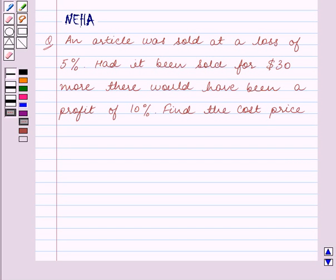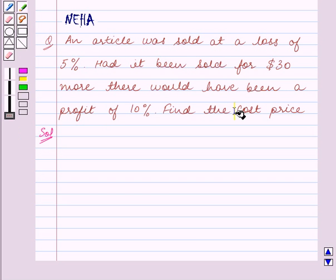Hello and welcome to the session. In this session we will discuss the following question: An article was sold at a loss of 5%. Had it been sold for $30 more, there would have been a profit of 10%. Find the cost price. Let's start the solution. We have to find the cost price.